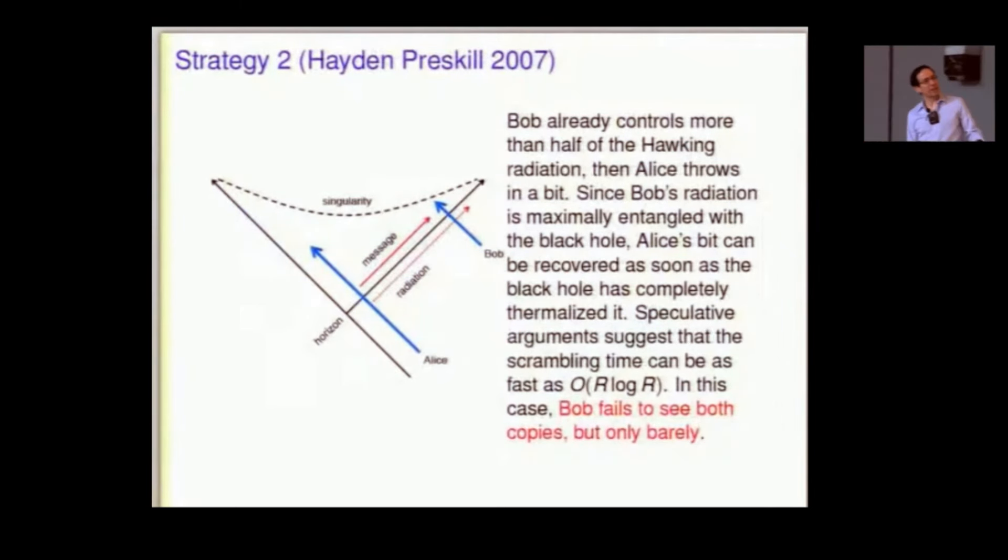Okay. So, it's actually a little funny that we fail by this much. And it would be more convincing if it was just barely impossible to see both copies. And that's what Hayden and Preskill, they came up with a second strategy where you just barely fail. That, to me, made it much more convincing.